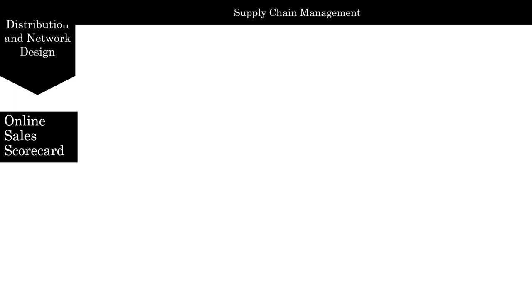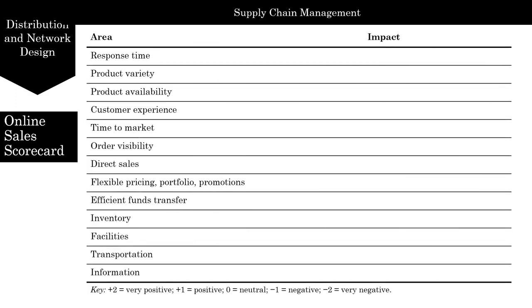A firm can use a B2C online sales scorecard to summarize the impact of online sales in each of the areas identified. The value of setting up online sales is not the same in every industry. Amazon has seen profits increasing dramatically by going online, whereas Webvan and many other online groceries have gone out of business — so just going online is not going to fix all your problems. This scorecard can be used to understand how online sales have affected performance on different supply chain networks.